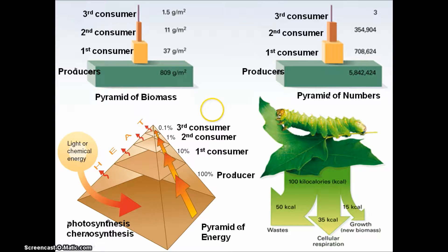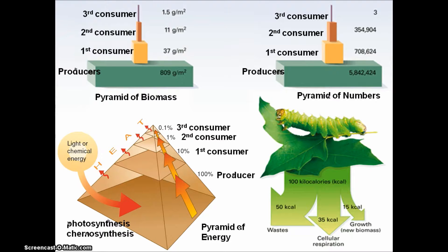We can see the same pattern — the consequences of this energy pyramid — in the pyramid of numbers and the pyramid of biomass. In the pyramid of numbers, we count how many individuals are producers versus first, second, or third order consumers across an entire ecosystem. The vast majority are producers, with fewer organisms as we move up the food web. Why are there far fewer consumers than producers? Simply because there is far less energy to support them. The same holds for biomass — the total mass at each level. Producers have far more total mass than all other consumers combined, because there's less energy to support more bodies higher up in the food web.